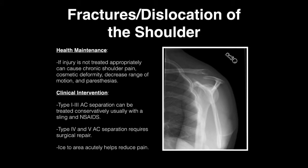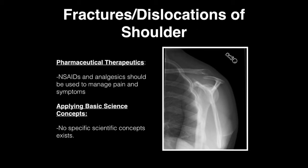If the injury is not treated appropriately, it can cause chronic shoulder pain, cosmetic deformity, decreased range of motion, and paresthesias. Types 1 through 3 can usually be treated conservatively with NSAIDs and a sling. Types 4 through 5 typically require surgical repair. Ice to the area acutely helps reduce pain, and NSAIDs and analgesia should be given to manage the patient's symptoms.